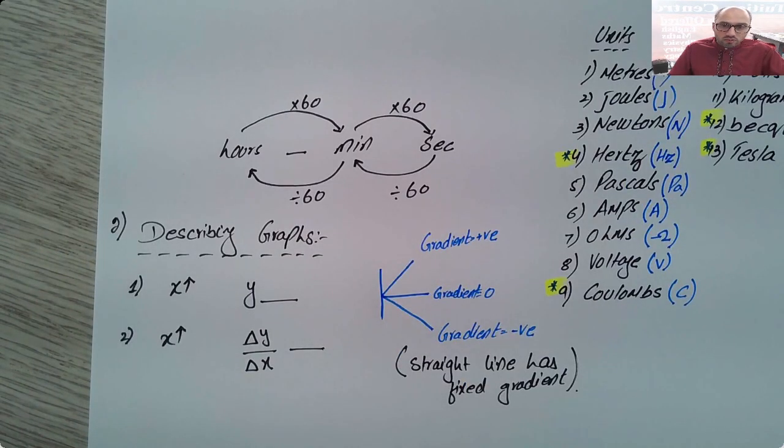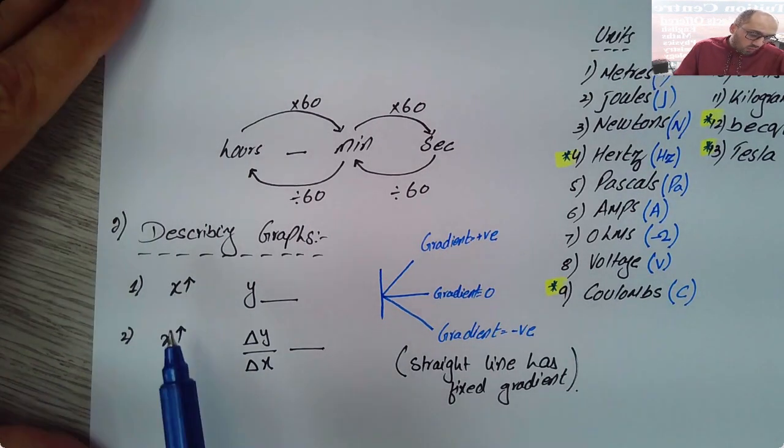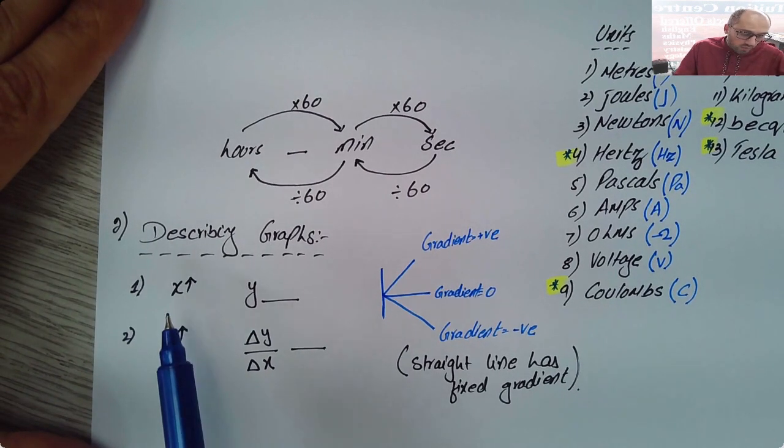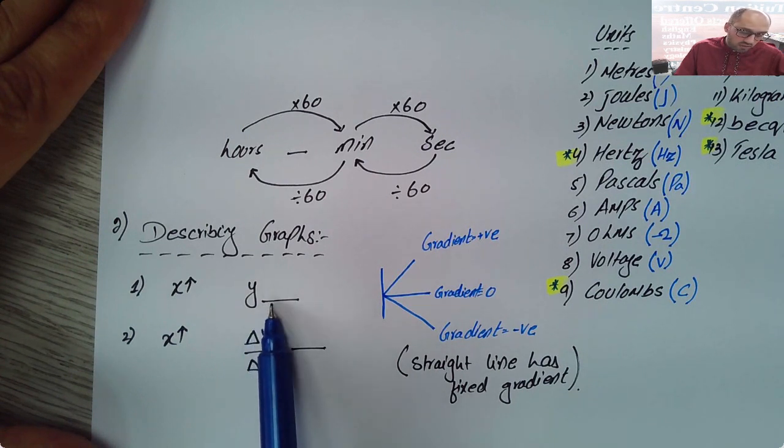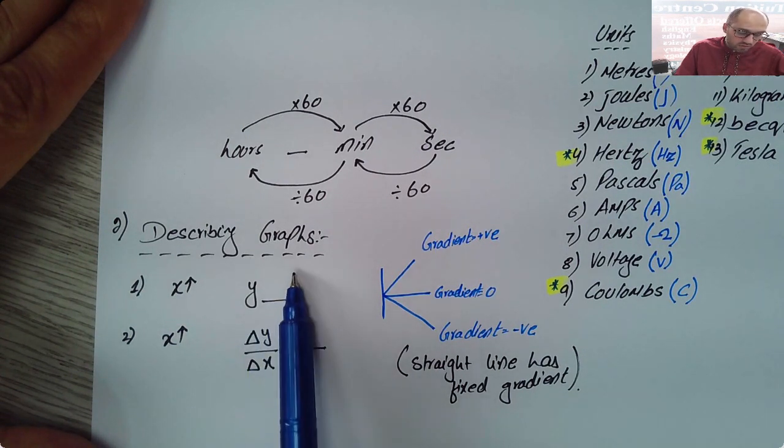The second skill that you will need to know is describing graphs. In your exam there will be questions where they'll ask you to describe the relationship between the variable on y-axis and the variable on x-axis. Now there's a general rule: what you need to say is one mark will be for stating when x increases what happens to the value of y. If it increases you can say it goes up. If it decreases you can say it goes down.